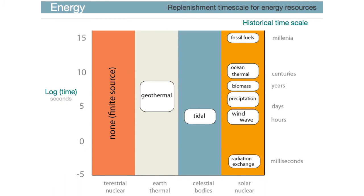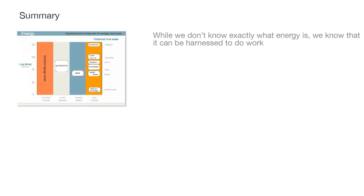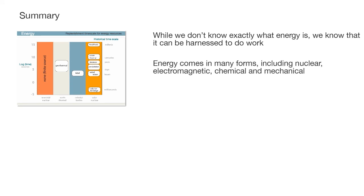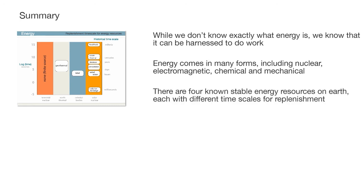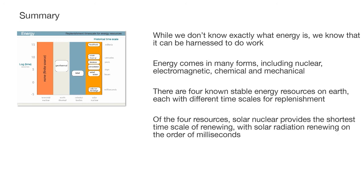While we don't know exactly what energy is, we do know that it can be harnessed to do work. Energy comes in many forms, including nuclear, electromagnetic, chemical, and mechanical. There are four known stable energy resources on Earth, each with different timescales for replenishment. Of the four resources, solar nuclear provides the shortest timescale of renewing, with solar radiation renewing on the order of milliseconds. In the next video, we'll review the relative magnitudes of global energy resources.